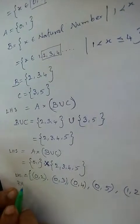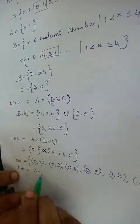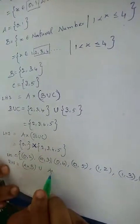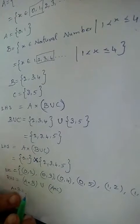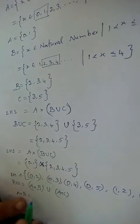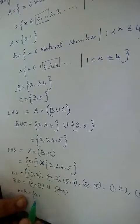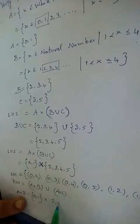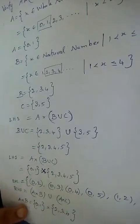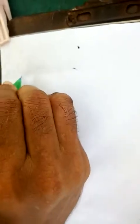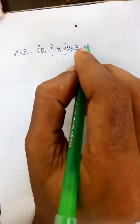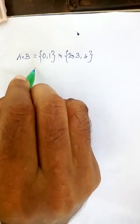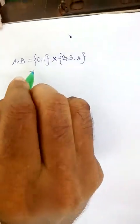Similarly we have to find the right hand side value, which is (A cross B) union (A cross C). First we have to find A cross B. The cross product means we have to write the elements in ordered pairs, pairing each element of A with each element of B.